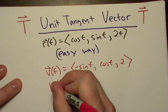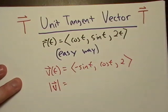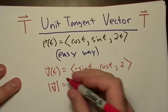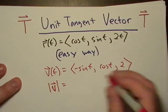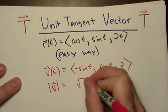If I want the magnitude of the forward velocity, that's going to be sine squared plus cosine squared plus 4. That will be square root of 3.